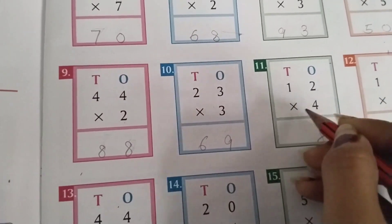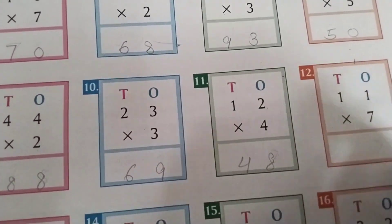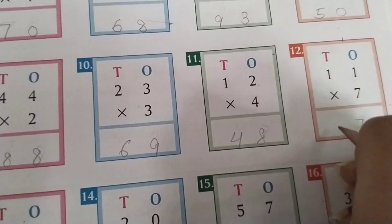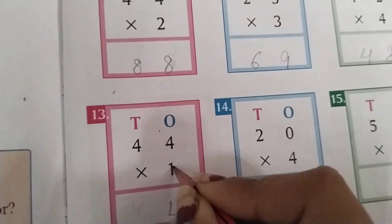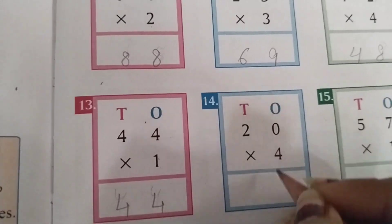4 2s are 8. 4 1s are 4. 7 1s are 7. 7 1s are 7. 1 4s are 4. 1 4s are 4. 1 4s are 4. 4 0s are 0.